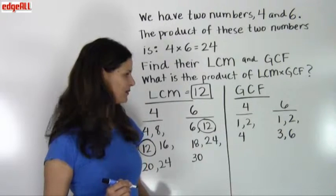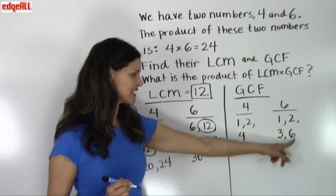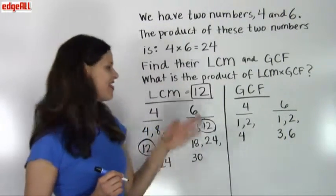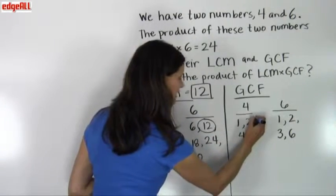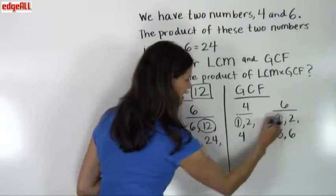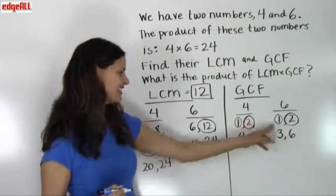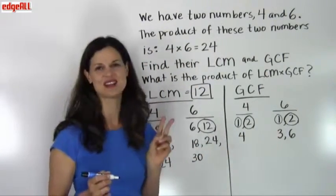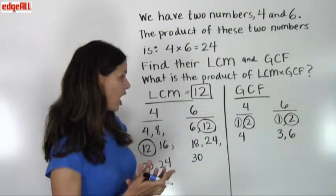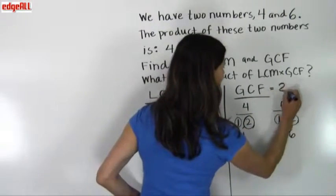So these are the three factors of 4: 1, 2, and 4. I've listed here the factors of 6: 1, 2, 3, and 6. The only number and the greatest number that these two lists of factors have in common — well, 1 is always in common, but the greatest one they have in common is the number 2. They have 1 and 2 in common, but we're looking for the greatest of those. So the greatest common factor of 4 and 6 is 2.